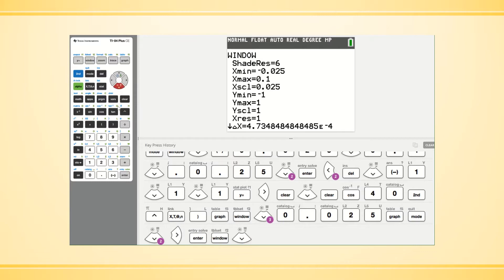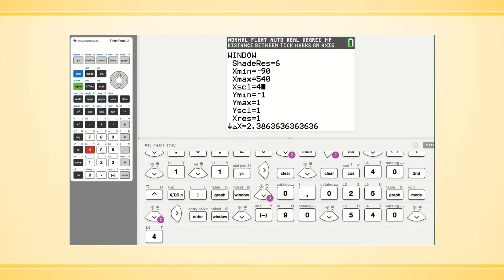Let's see. What do I say? I said we're going to do x min at negative 90, and the x max at 540. That's like three cycles. And then I'm going to do the x scale at 45. And I had the y min at negative 1, y max at 1, scale of 1.